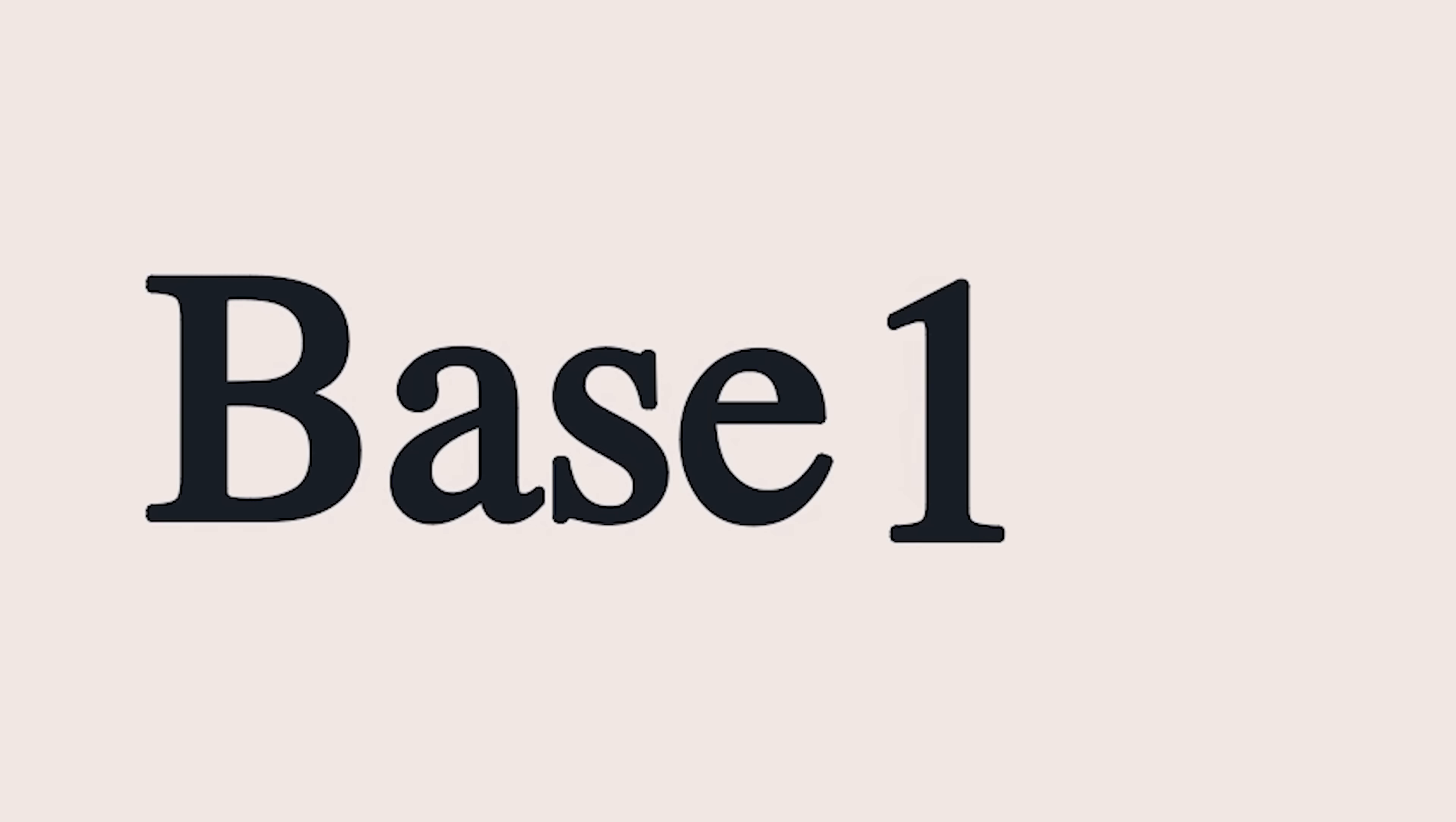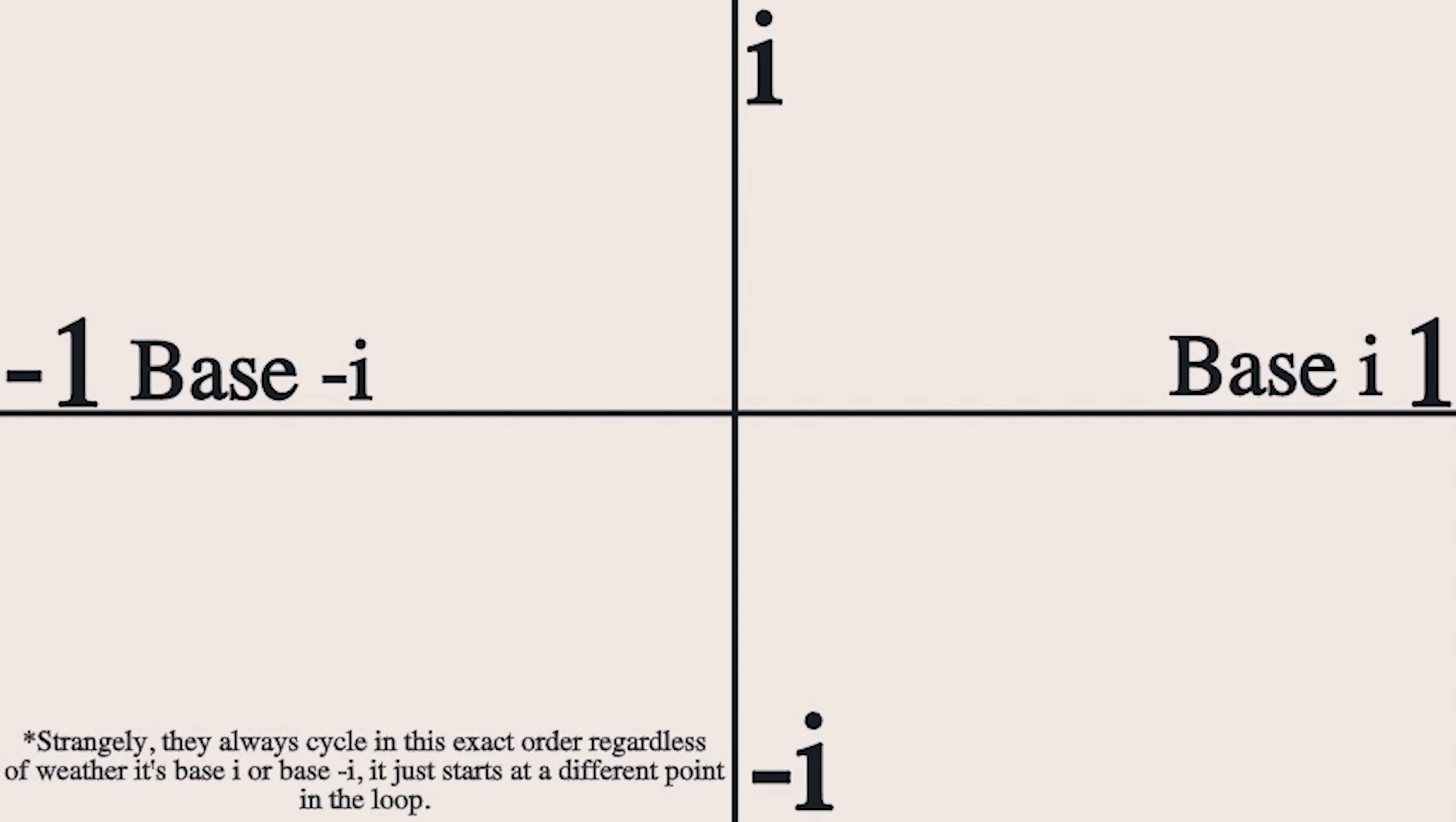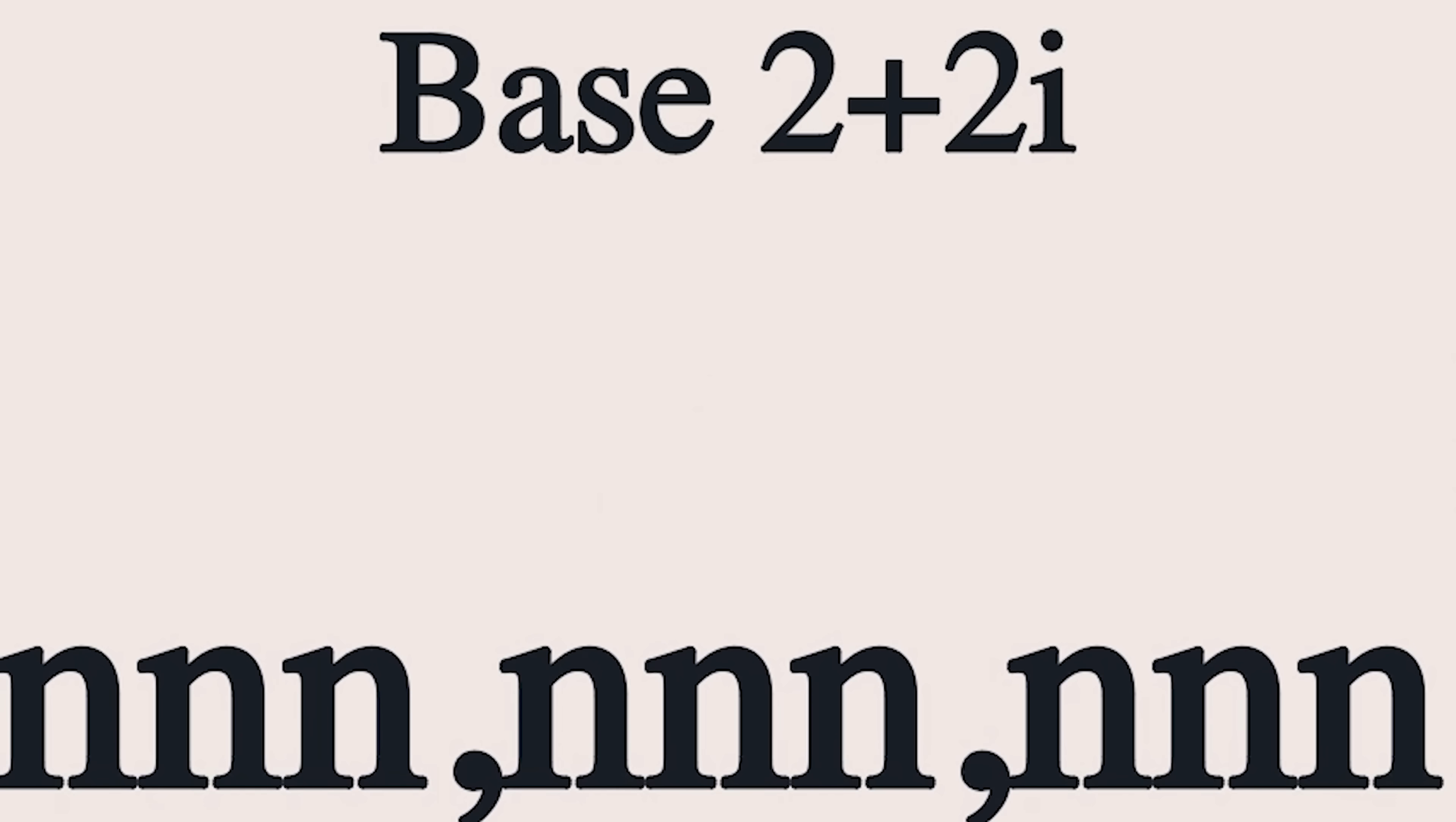If we can do positive or negative bases, could we even do an imaginary base? Numbers in base i and negative i flip-flop between all four states of being. Each digit goes through being some multiple of i, negative 1, negative i, or 1, cycling round and round. What about complex numbers? They work as well. Try base 2 plus 2i to get digits that represent 1, 2 plus 2i, 8i, negative 16 plus 16i, and on and on it goes.